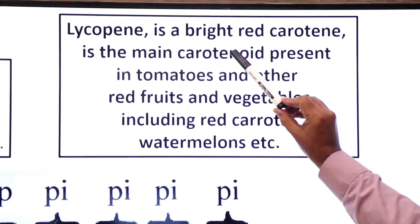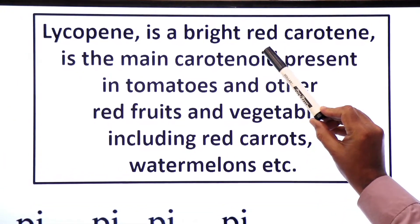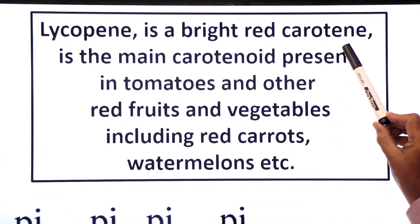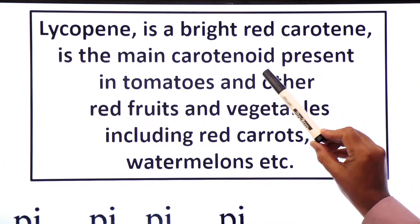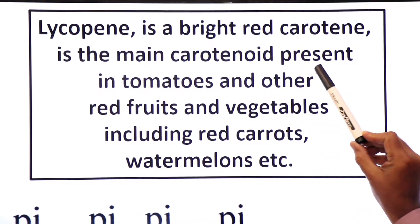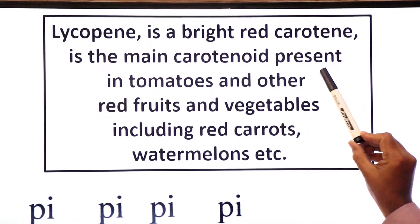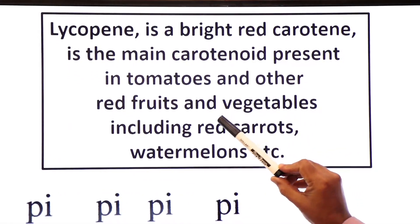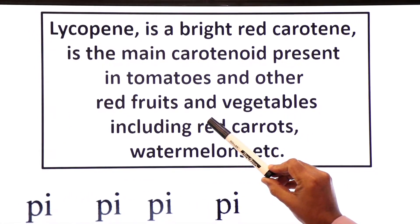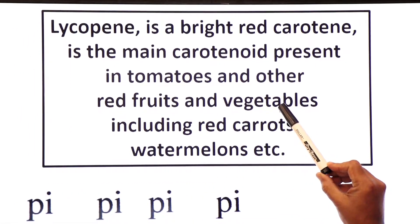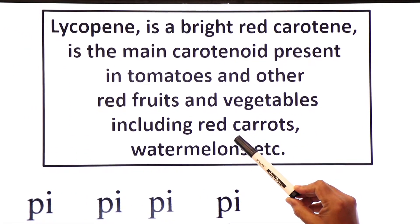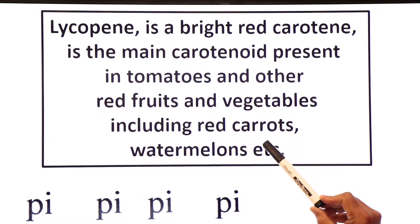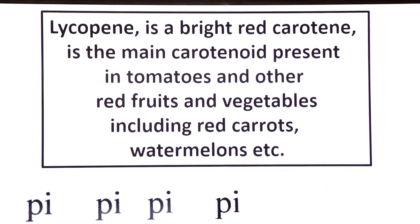Lycopene is a bright red carotenoid. It is the main carotenoid present in tomatoes and other red fruits and vegetables, including red carrots and watermelon.